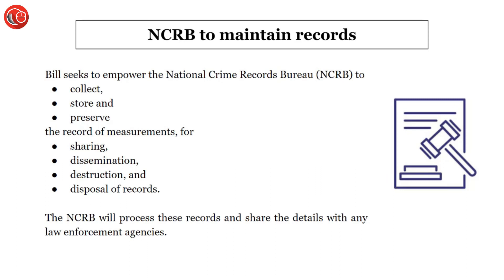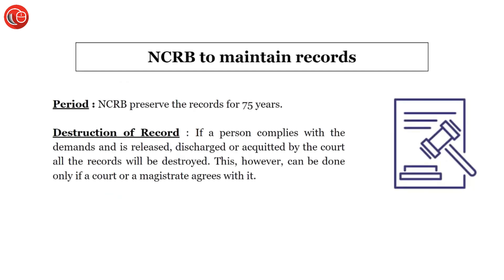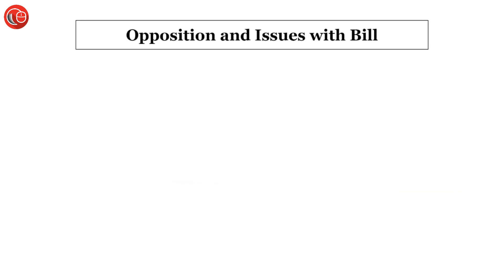Additionally, the NCRB will be able to share this data with law enforcement agencies. The NCRB can preserve this data for 75 years. Regarding destruction — if a person is released, discharged, or acquitted by the court, in that condition the collected record and data will be destroyed. However, for destruction, prior permission and an order from the court or magistrate will be required.